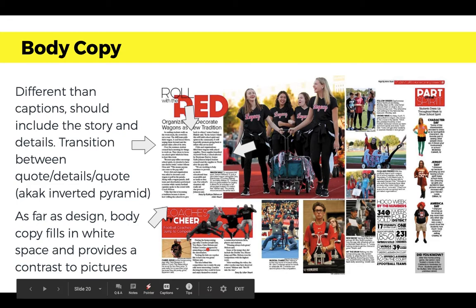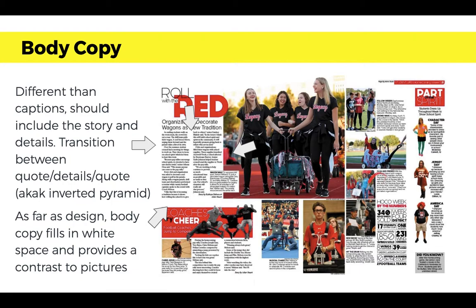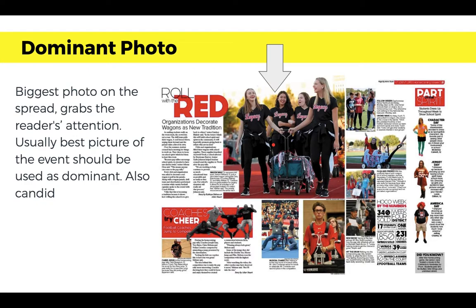If we had all these pictures with no text, think of all the white space you'd have without extra text to help you understand what's going on in the photos. Our dominant photo is the biggest photo on the spread — it grabs the reader's attention and is usually the best picture of the event. That should always be used as the dominant. This spread's dominant photo makes sense with the headline 'Roll with the Red' — there are wheels, they're rolling, and organizations are decorating wagons.